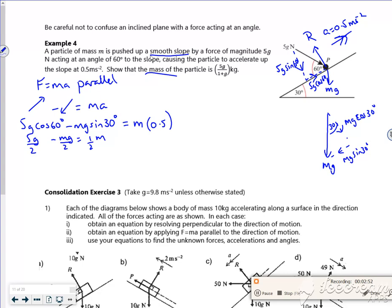Sine 30 is a half as well, minus mg over 2 equals a half of m. Those halves they can all disappear, so you have 5g minus mg is equal to m.